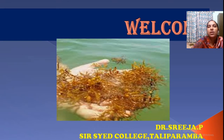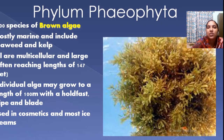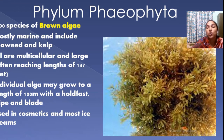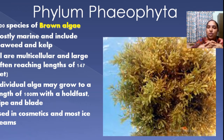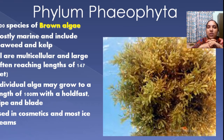Now we are moving on to our last type that belongs to the class Phaeophyta, phylum Phaeophyta or brown algae. There are about 1500 species of brown algae worldwide. They are marine forms, found in the ocean. They are considered as the forest of the ocean because they are so profusely and widely growing into large forms.